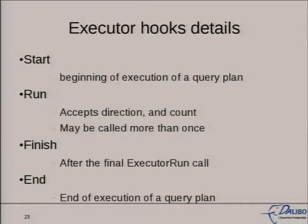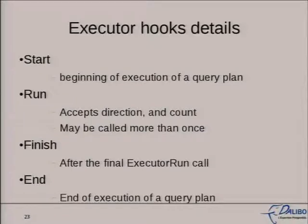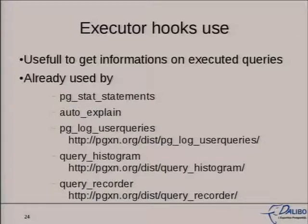On the executor hooks, there are four hooks for the executor: executor_start, run, finish, and end. The executor_start hook is executed at the beginning of the execution of a query plan. The executor_run hook may be called more than once — it accepts directions and count depending on how many tuples you'll have. The executor_finish hook is called after the last executor_run call, and executor_end is executed at the end of the query plan. There are many contrib modules that use the executor hooks — they're probably the most-used hooks and are really interesting for getting information on executed queries.